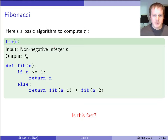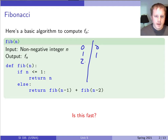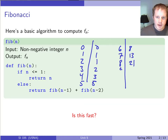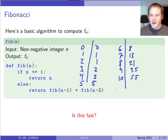The Fibonacci sequence: Fib(0)=0, Fib(1)=1, Fib(2)=1, Fib(3)=2, Fib(4)=3, Fib(5)=5, Fib(6)=8, Fib(7)=13, Fib(8)=21, Fib(9)=34, Fib(10)=55. Each value is the sum of the previous two. It grows slowly at first but then faster and faster.